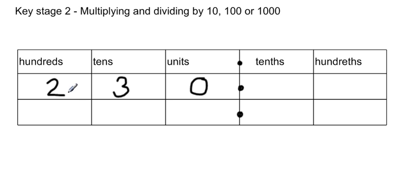all the digits move one place to the right. So the hundreds move into the tens, the tens move into the units, and the units move into the tenths. So we would have 230 divided by 10 would give us 23.0. However, we would just write this as 23.